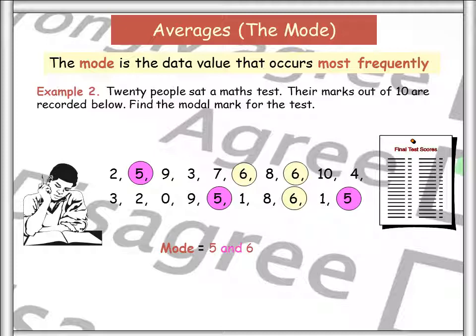Please don't forget that there can be three modes, four modes. But also, if there is not one number or one data set that occurs more frequently, then we say there is no mode.